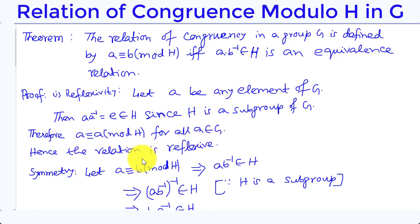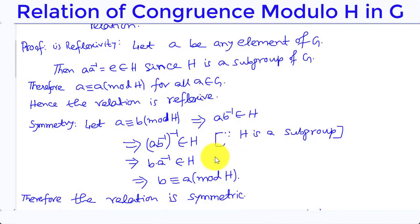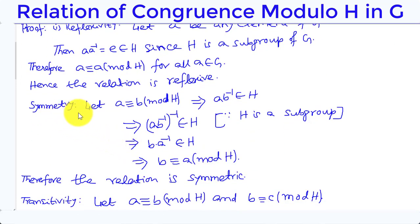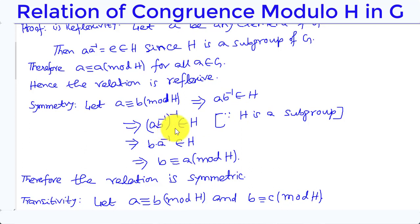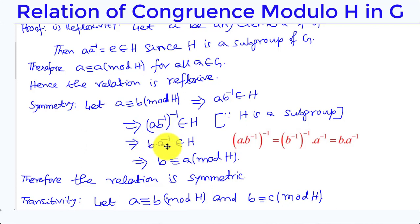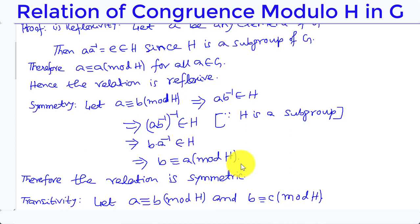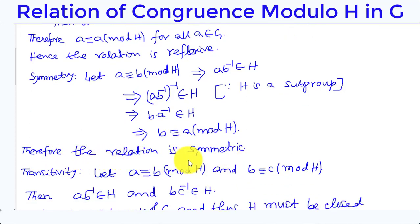Hence, the relation is reflexive. Symmetry: Let A ≡ B (mod H), which implies A·B⁻¹ ∈ H. Since H is a subgroup, (A·B⁻¹)⁻¹ ∈ H, which implies B·A⁻¹ ∈ H, and therefore B ≡ A (mod H). Hence, the relation is symmetric.